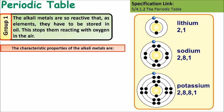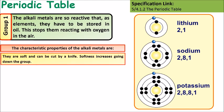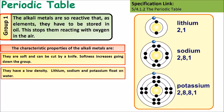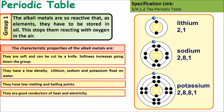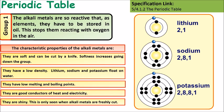Group 1 elements are called alkali metals. They all have certain characteristics. They're all soft and can be cut by a knife. They increase in softness as you move down the group. They all have a low density, so lithium, sodium and potassium all float on water. They all have low melting and boiling points. Because they're metals they're good conductors of heat and electricity, and they're all relatively shiny, or at least shiny when they're freshly cut before they react with oxygen.